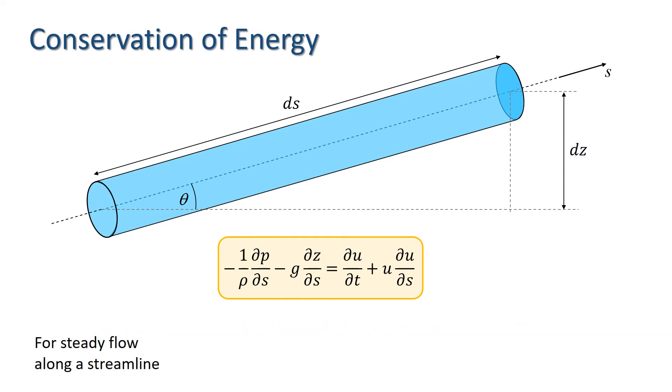For steady flow along a streamline, the time derivative term disappears, and we have this variation on the Euler equation. Rearranging this, we have...